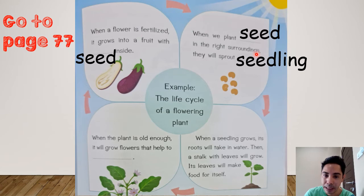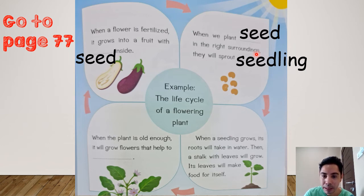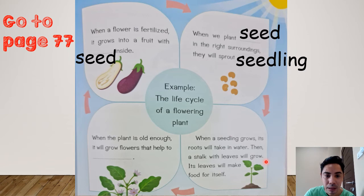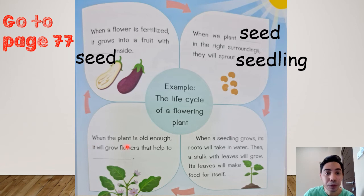From seedling to sapling — when a seedling grows, its roots will take in water, and then a stalk with leaves will grow bigger and bigger. Its leaf will make food for itself — remember the photosynthesis I taught you last time? The sunlight will give energy to the plant and the leaves will make food. After that, when the plant is old enough, it will grow flowers, like the violet flowers, that will help them to breed or reproduce — meaning it will make a new baby plant.